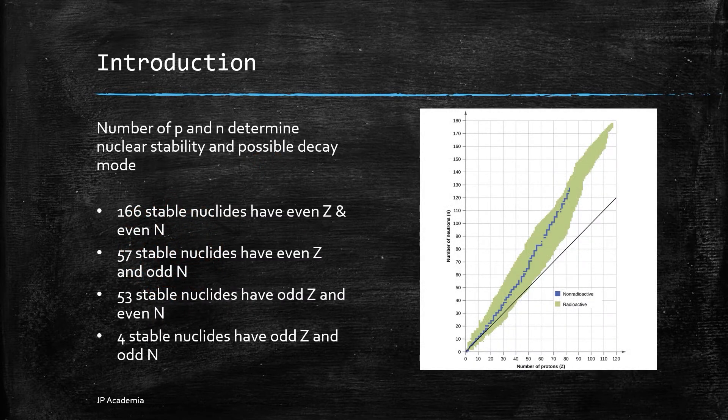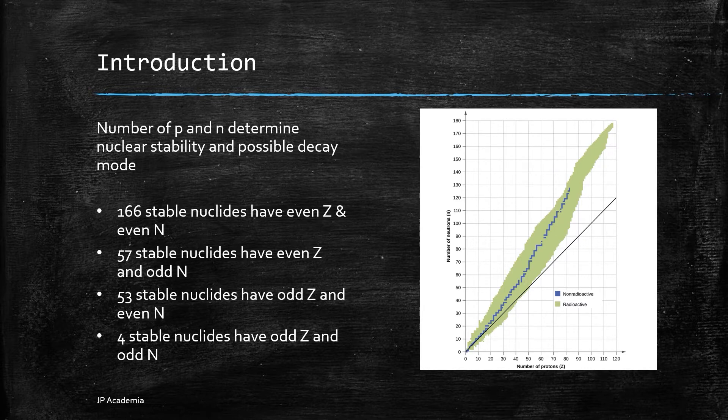The stability of a nucleus is determined by different forces acting between nucleons. Stable nuclei contain a balanced configuration of protons and neutrons. Shown in this list are the number of stable nuclides per case. For example, we have even Z even protons and even number of neutrons, then we have this number of stable nuclides. Same with even Z and odd N, odd Z even N, and odd Z odd N. The number of protons and neutrons determine the nuclear stability and the possible decay modes as well.